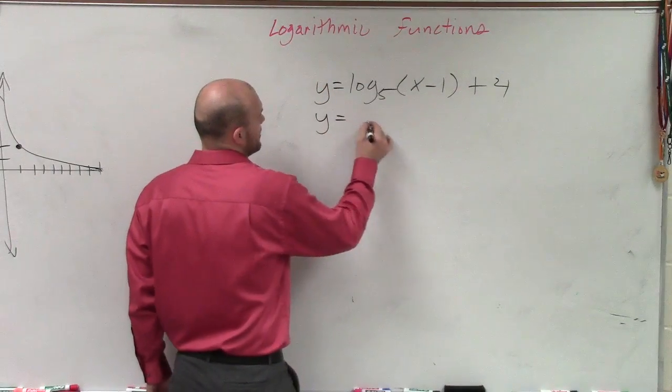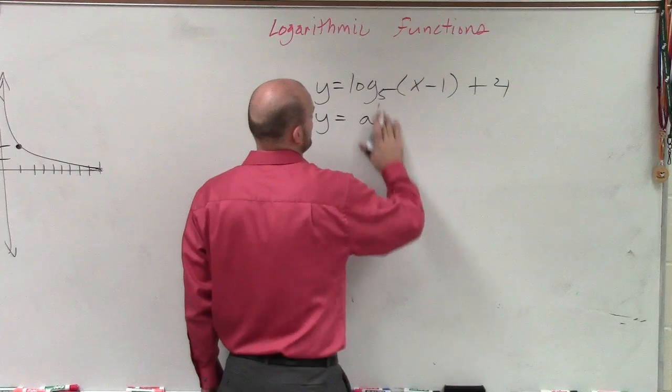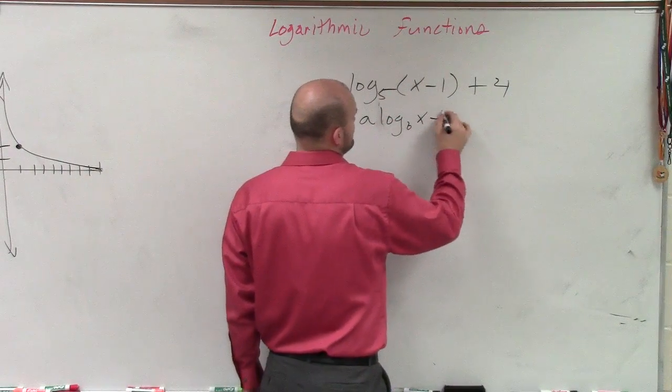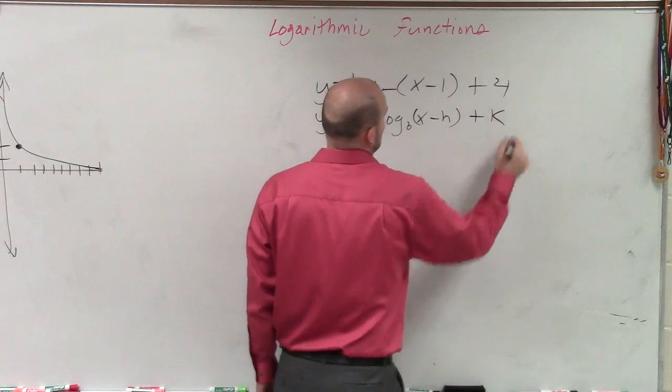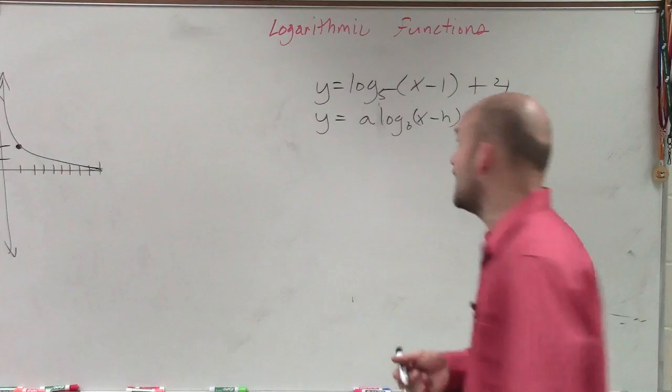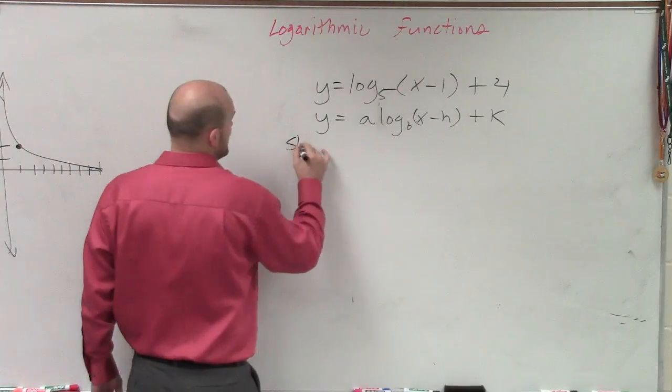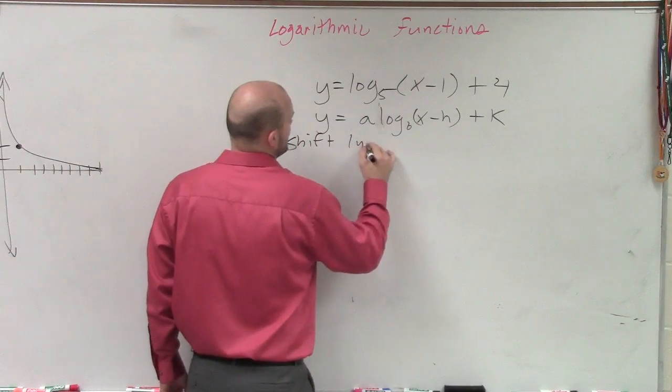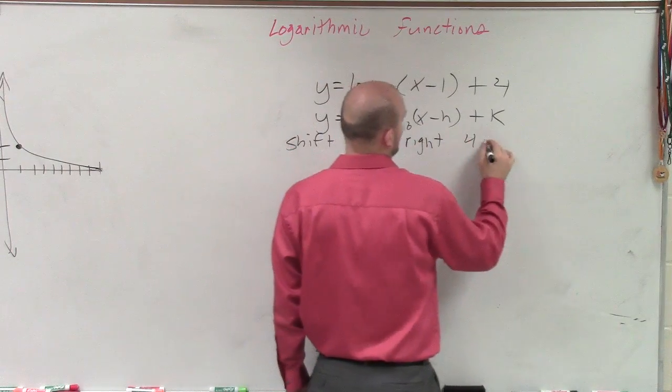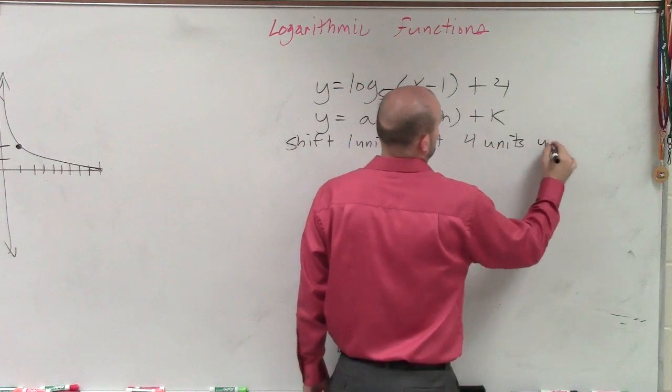So first of all, let's look at y equals a times log base b of x minus h plus k. So by looking at my transformations and understanding what h and k are, I know that this graph is going to shift one unit to the right and four units up.